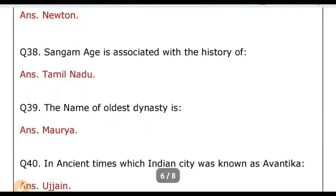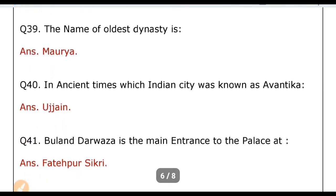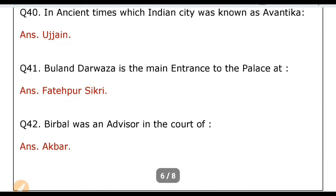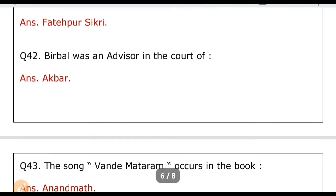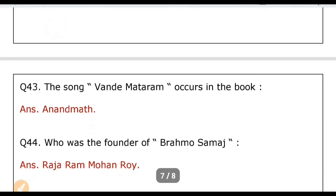What is the name of the oldest dynasty? Answer: Maurya. In ancient times, which Indian city was known as Avantika? Answer: Ujjain. Buland Darwaza is the main entrance to the palace at? Answer: Fatehpur Sikri. Birbal was an advisor in the court of? Answer: Akbar. The song 'Vande Mataram' occurs in the book? Answer: Anand Math.